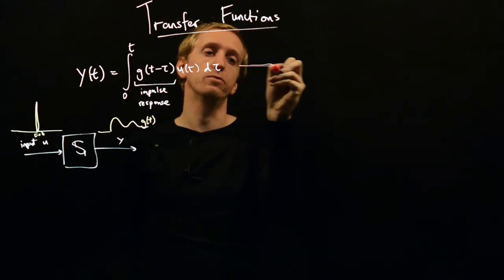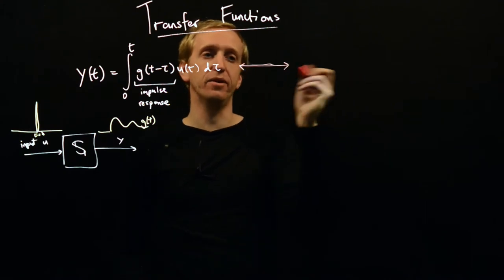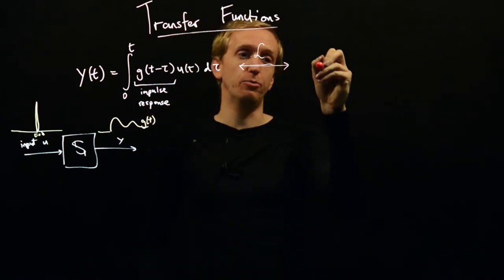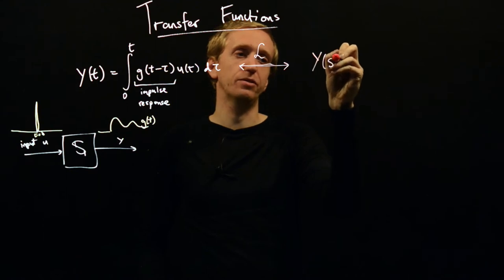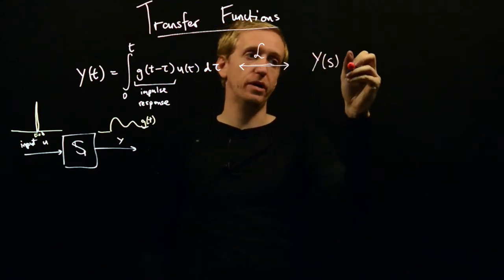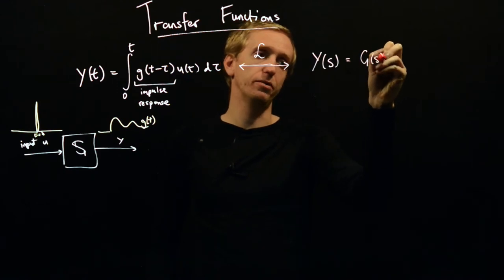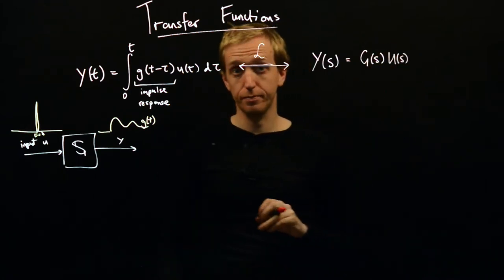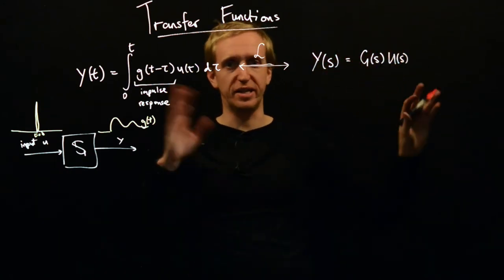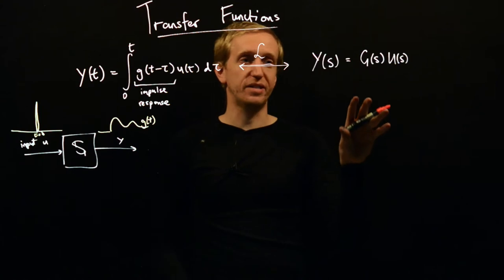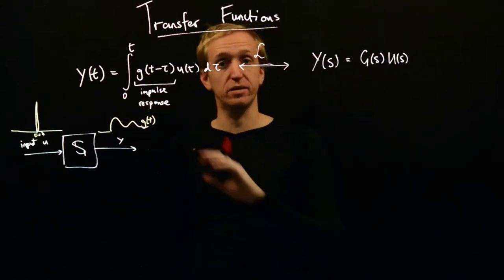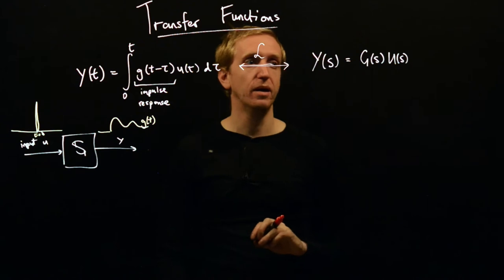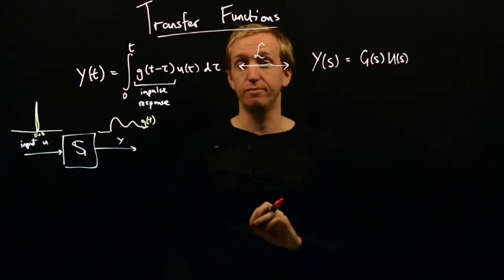The key advantage here is that by taking the Laplace transform, we can replace this convolution with a transfer function representation, which is just obtained by taking Laplace transform. So the Laplace transform of our output y is equal to the Laplace transform of our impulse response g, multiplied by the Laplace transform of our input u. Then we do everything in the Laplace domain, including all of our interconnection and design and all sorts of other things, safe in the knowledge that when we're done we could always return to the time domain whenever we wanted.